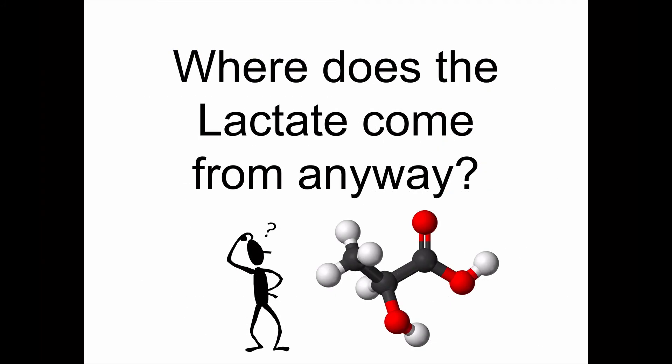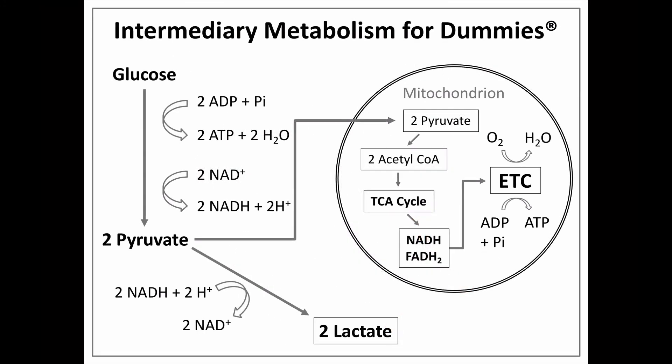We've been talking about elevated lactate levels, but where does the lactate come from? This is a single-figure summary of high-yield carbohydrate metabolism. Starting with glucose, we go through glycolysis to form two molecules of pyruvate, making a little bit of ATP and reducing NAD+ to NADH. Pyruvate then enters the mitochondria, gets decarboxylated forming acetyl-CoA, which combines with oxaloacetate and enters the TCA cycle, producing the NADH and FADH2 that power the electron transport chain, where we use up oxygen and produce lots of ATP.